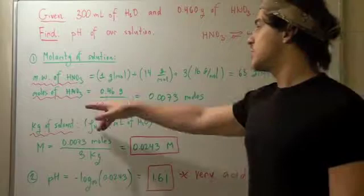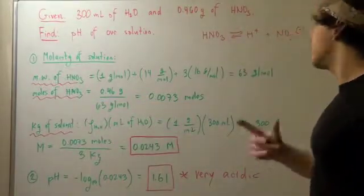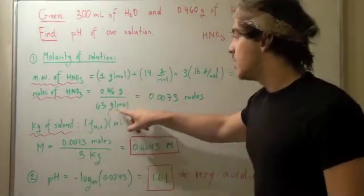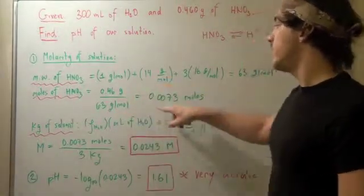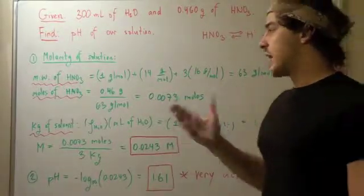Now to find the moles of nitric acid, we take our grams of nitric acid, divide that by our molecular weight. Grams cancel, moles goes on top, and we get 0.0073 moles of nitric acid.